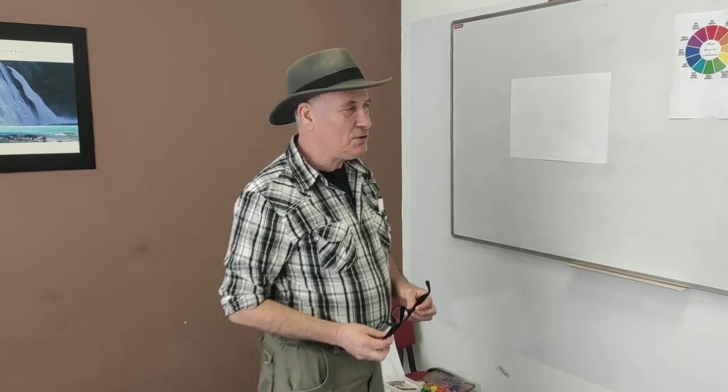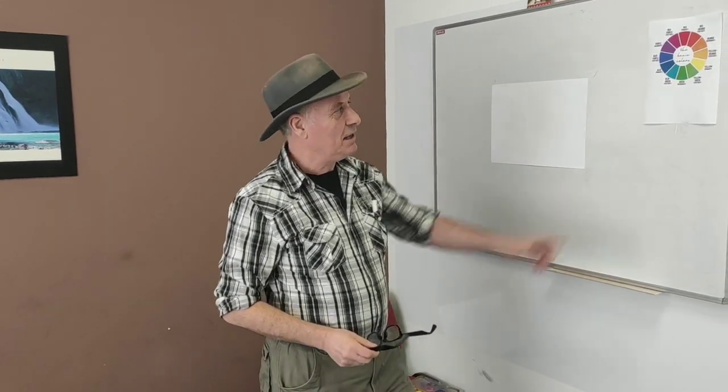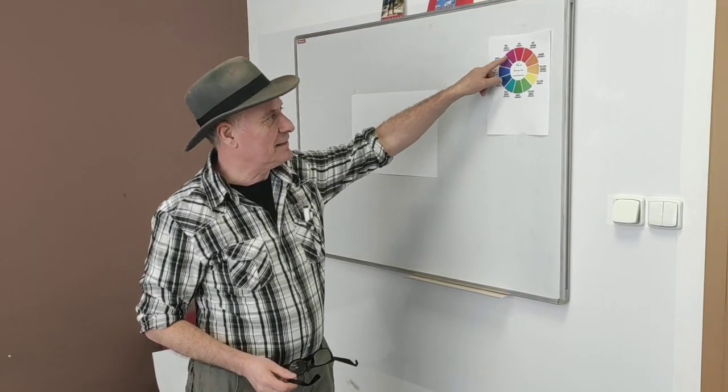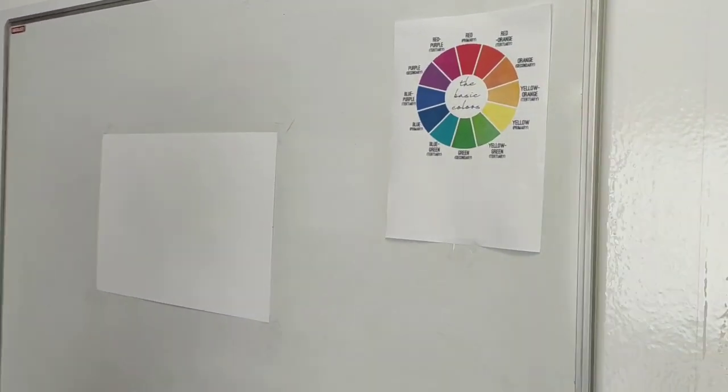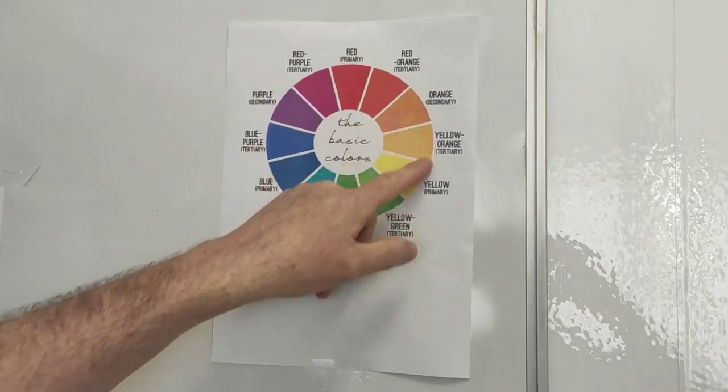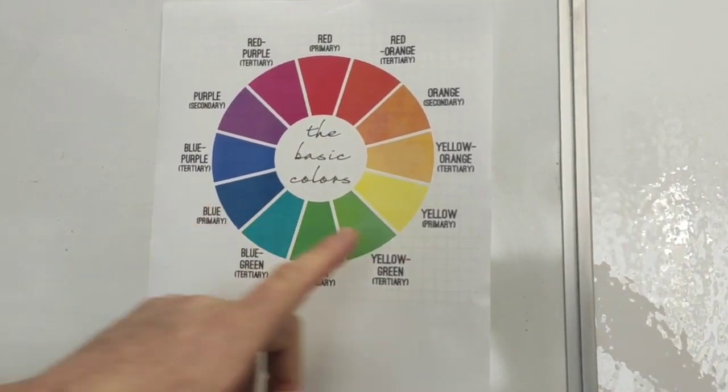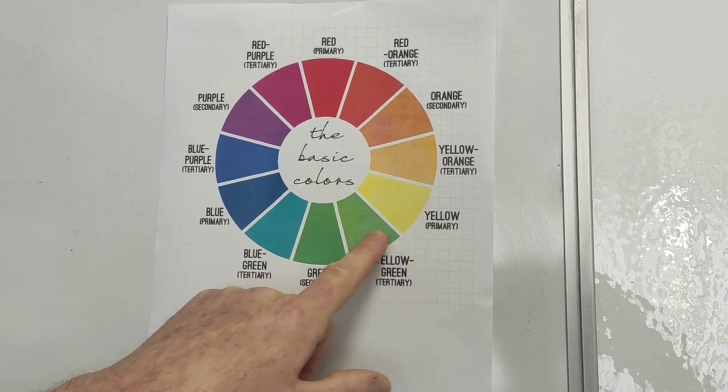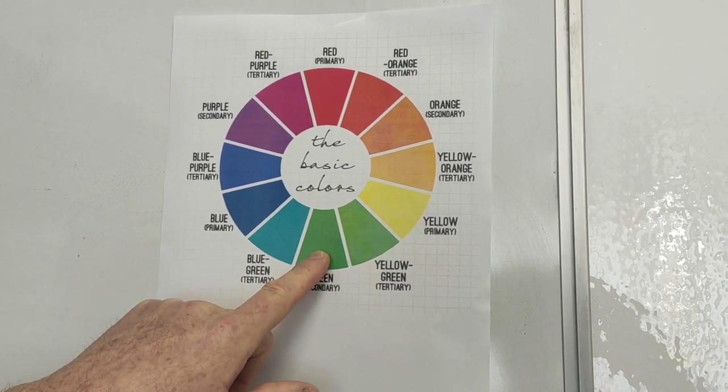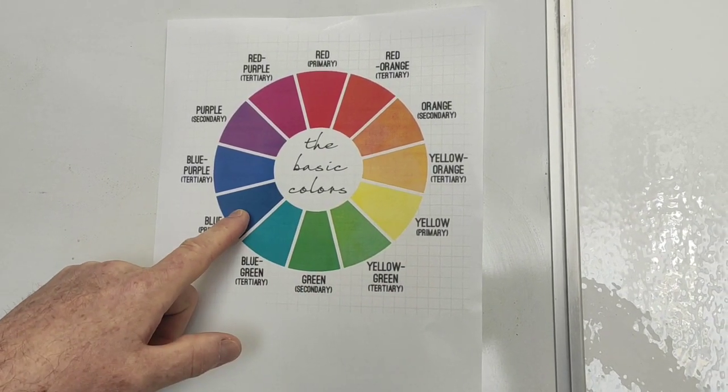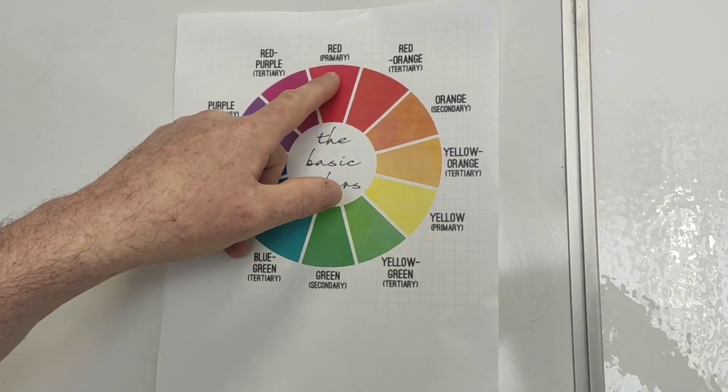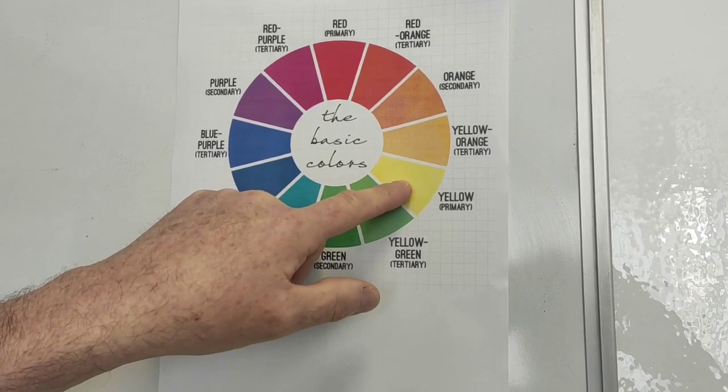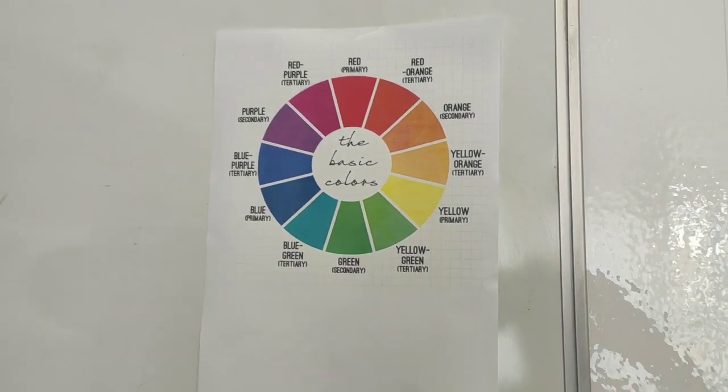Now, today we're going to do something about the color wheel. This is a color wheel here. Come in, Libos. Libos is here with me. Do you see all the colors in the color wheel? Starting with yellow, green, blue, purple, red, orange, and back to yellow. We're going to have some fun with that.